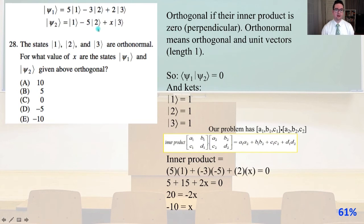Number 28. The states ket 1, ket 2, ket 3 are orthonormal. For what value of X are the states psi 1 and psi 2, given above, orthogonal? And it's going to be orthogonal if their inner product is 0, which means they're perpendicular. Orthonormal means orthogonal and unit vectors of length 1. So our bra and ket with our psi 1, psi 2 equals 0. And the ket's 1, 2, 3 are all of unit length. They all equal 1. And our problem has A1, B1, C1 times A2, B2, C2.